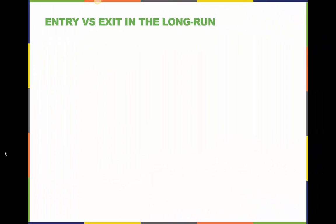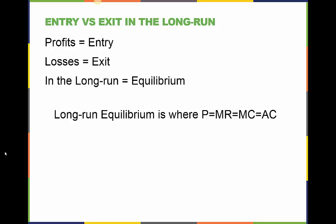In the long run, firms can enter or exit the market. They are tempted to enter if profits can be made, but if losses are being experienced in the market, they leave. They do this until the market reaches equilibrium. This is where price equals marginal revenue equals marginal cost equals average cost. Producers experience a change in equilibrium and market entry and exit happen when forces like shifting demand, technology innovation, or input cost changes lead to disequilibrium.